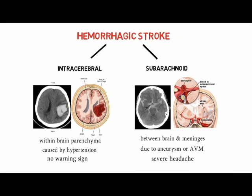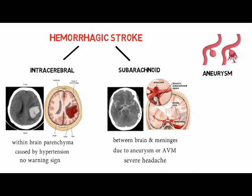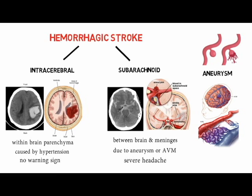An aneurysm is a weakened, ballooned area on an artery wall and has a risk of rupturing. An aneurysm may be congenital — present at birth — or may develop later in life due to factors such as hypertension or atherosclerosis. An AVM is a congenital disorder consisting of a disorderly tangled web of arteries and veins. Its cause is unknown but is sometimes genetic or part of certain syndromes.